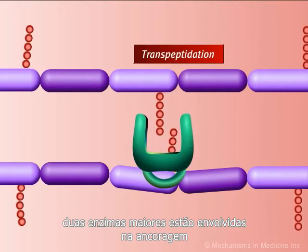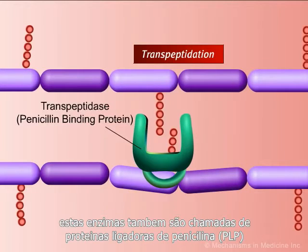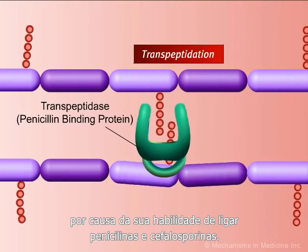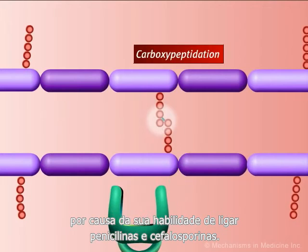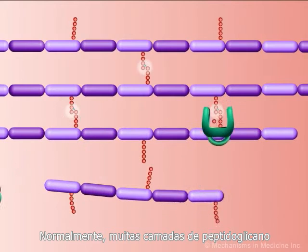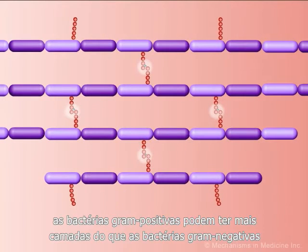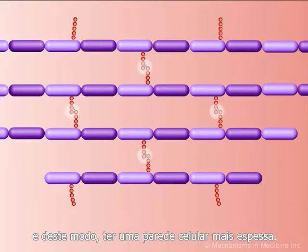Once in the periplasm, the peptidoglycan precursors bind to cell wall acceptors and undergo extensive cross-linking. Two major enzymes are involved in cross-linking: transpeptidase and D-alanyl carboxypeptidase. These enzymes are also known as penicillin binding proteins because of their ability to bind to penicillins and cephalosporins. Eventually, several layers of peptidoglycan are formed, all of which are cross-linked to create the cell wall. Gram-positive bacteria may have more layers than gram-negative bacteria and thus have a much thicker cell wall.